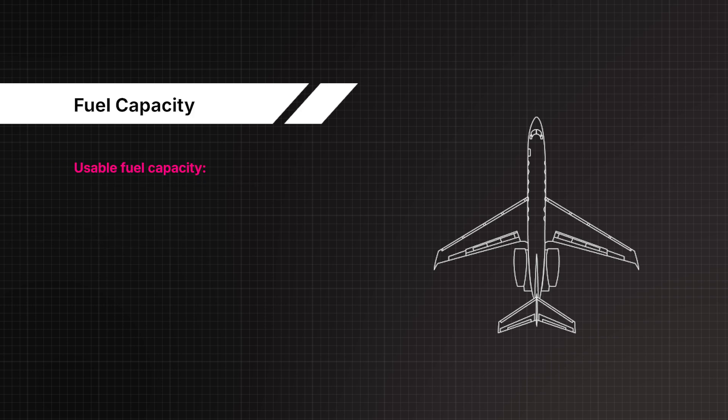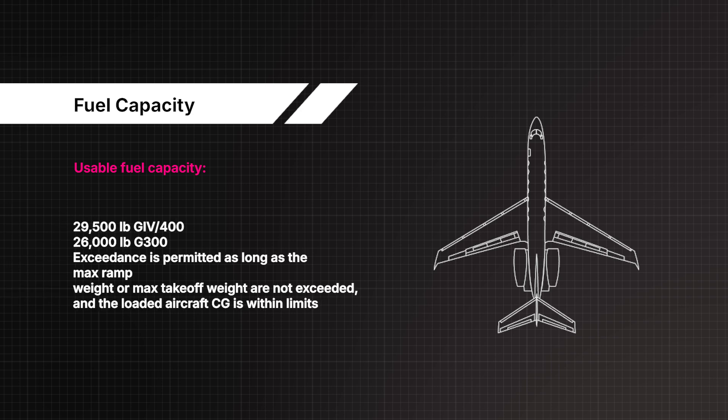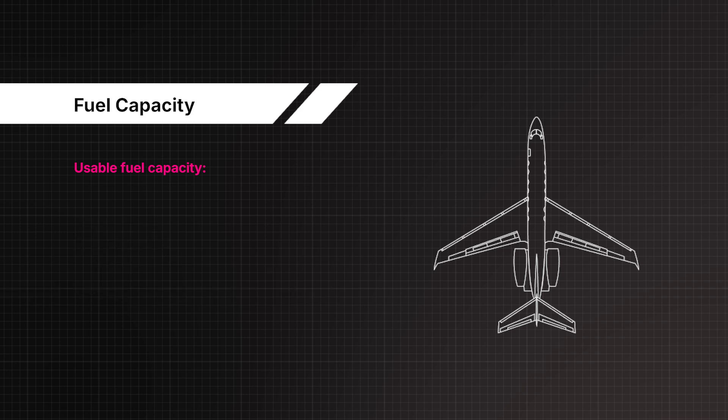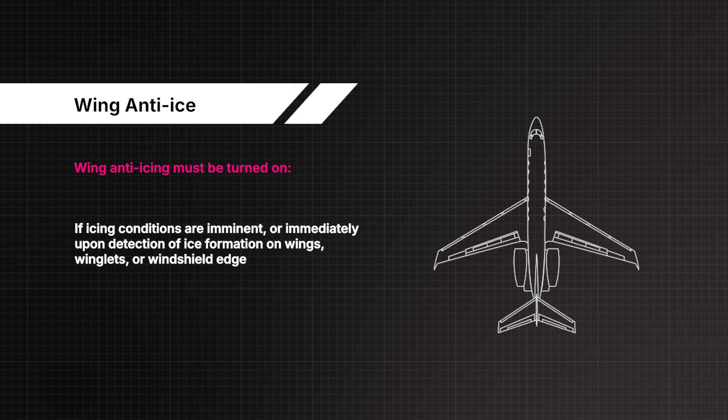Usable fuel capacity: 29,500 pounds for G4 and 400 series. Exceedance is permitted as long as the max ramp weight or max take-off weight are not exceeded and the loaded aircraft CG is within limits. Wing anti-icing must be turned on if icing conditions are imminent or immediately upon detection of ice formation on wings, winglets, or windshield edges.